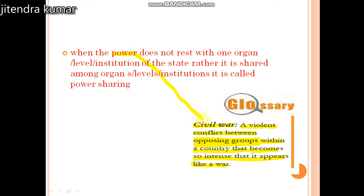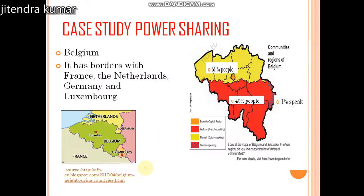So, we need to avoid civil war. We have seen two countries in this chapter that we are going to study — the case of Sri Lanka and Belgium.